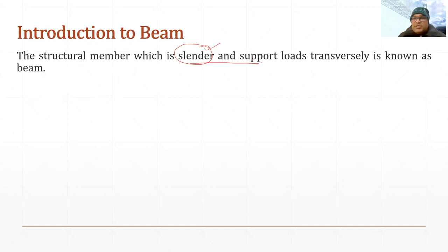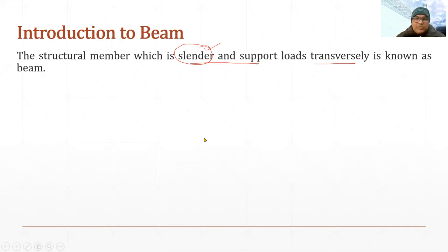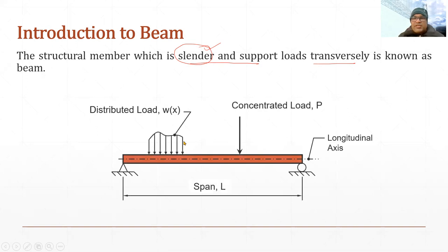Similarly, it says which supports load transversely, which means a member, a body may have different axes. If an axis passes along the longer side of a body, that axis may be known by some name. Similarly, if it is passing perpendicular to it, what will be the name? So first of all, I will show you the beam diagram, and in that we will try to understand what are the different axes and their names.